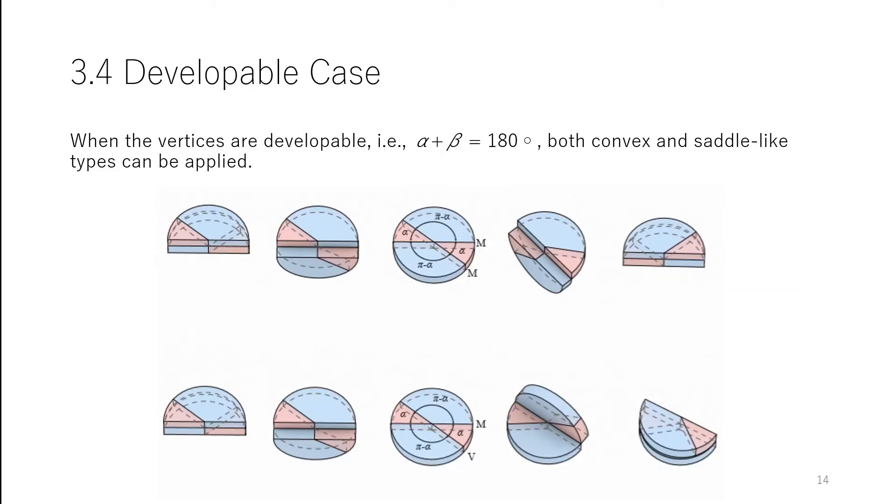When the convex type is chosen, the opposite pair have both mountains, while when the saddle-like type is chosen, the opposite pairs have a mountain and valley.